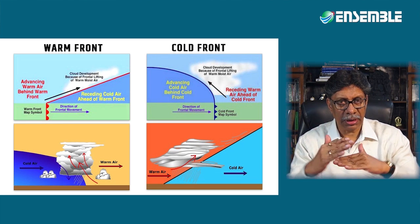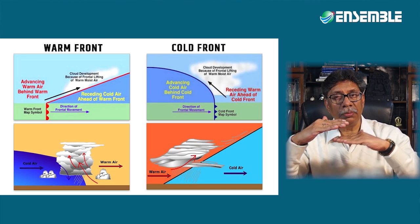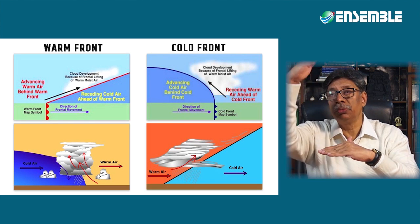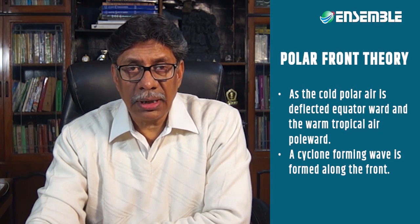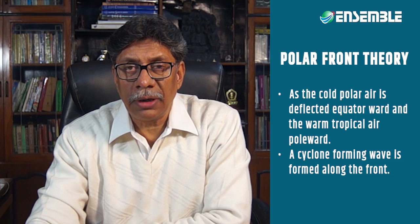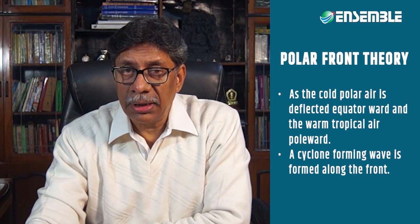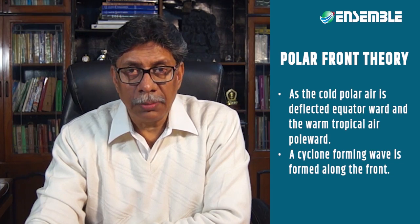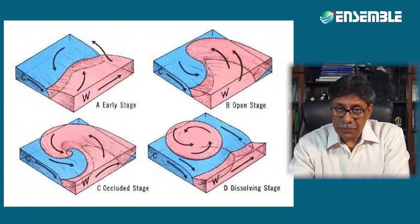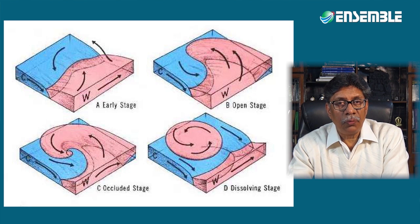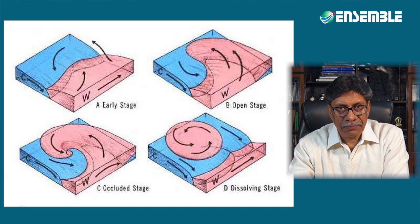When the dominant action is performed by the warm air — because it rises over the cold air — it is called a warm front. When the dominant action is performed by the cold air, which causes the warm air to move forward and upward, it is called a cold front. According to the polar front theory, as the cold air is deflected equatorward and warm tropical air moves poleward, a cyclone-forming wave is formed along the front, and the ascent of warm air along the warm front results in condensation, cloud formation, and precipitation.